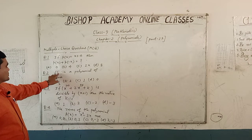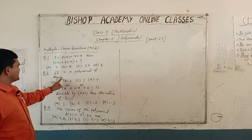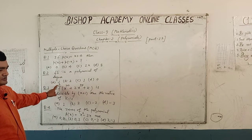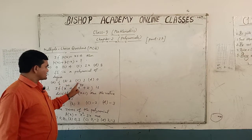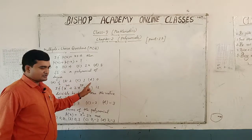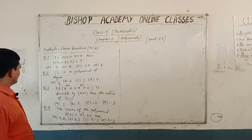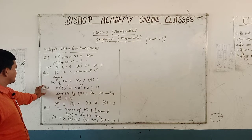Question number 2 is: root 3 is a polynomial of degree — option A is 1/2, option B is 2, option C is 1, option D is 0.